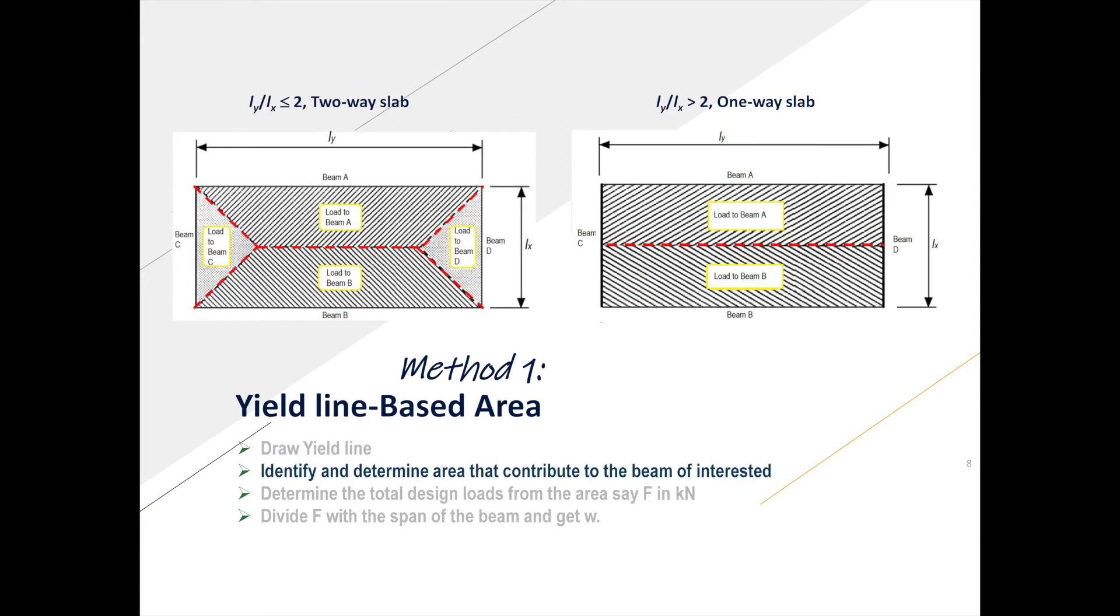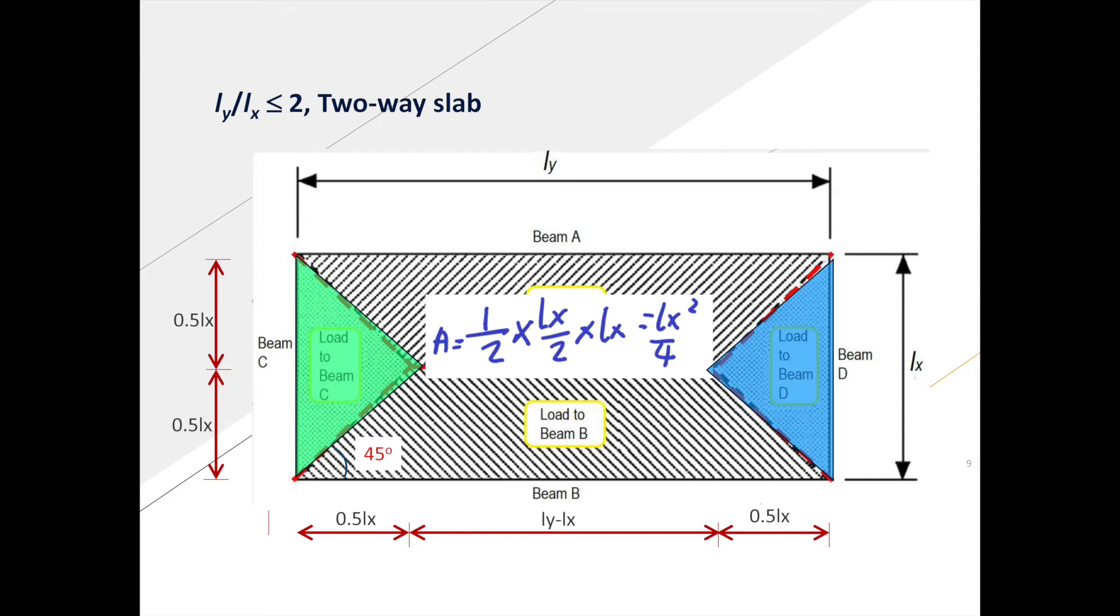Then we need to identify region and calculate its area that will contribute to the beam of interest. For a two-way slab, the highlighted regions will contribute a lot to beam C and beam D, and the area equations can be obtained using area of triangle.